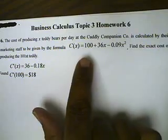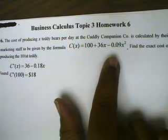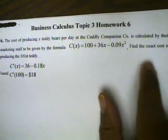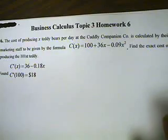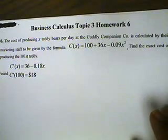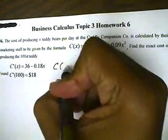to be given by the formula. The cost function equals 100 plus 36x minus 0.09x squared. We'll find the exact cost of producing the 101st teddy bear. I need to know how much it costs to make the 101st teddy bear and also how much it costs to make the 100th. So let's start with that.